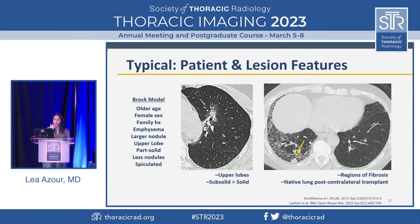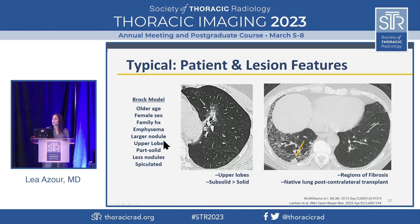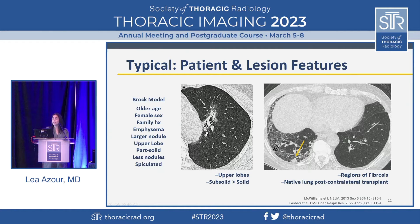There's the Brock model. In this model, patient factors include older age, female sex, and family history. Other risk factors include emphysema, a larger nodule, an upper lobe location — that's where emphysema usually is — part solid (as I just showed you several examples of those, typically adenocarcinomas), and having fewer nodules. Imagine a case of granulomatous disease: you have 100 nodules, but those are not cancer. Those very few, suspicious lesions I've shown you, and things like spiculation — those are what concern us.